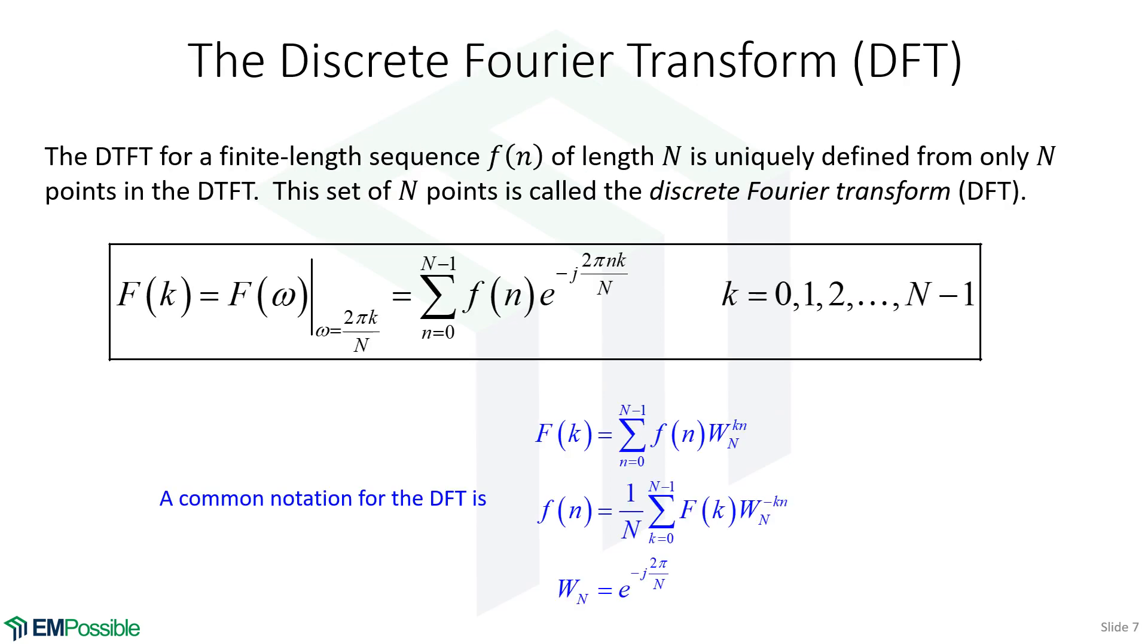Now the discrete Fourier transform, or DFT. Suppose we have a function and we sample it. So we'll write that as f(n), and we have n samples. If we calculate the discrete time Fourier transform, it turns out we can extract n points from that. That's our number of samples in the original function. And that completely and uniquely defines our Fourier transform. That set of n points is called the discrete Fourier transform. This is huge. And so here's typically the notation that folks would use for the DFT.